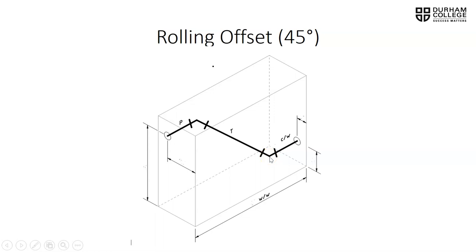Then we have another piece of pipe — once it goes back straight again from the 45 over to the wall before it leaves the box. This piece is known as our center-to-wall. We can also look at our wall-to-wall dimension of the box — the overall dimension from wall to wall.